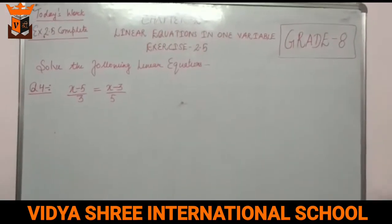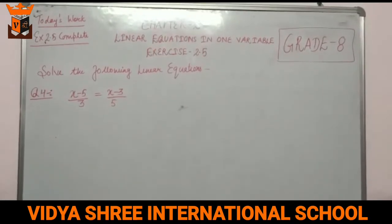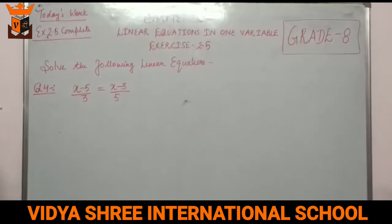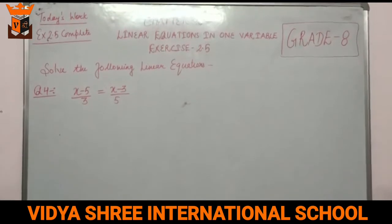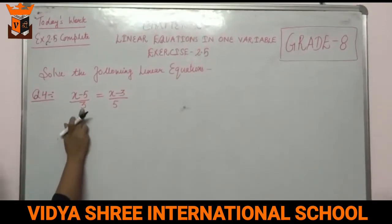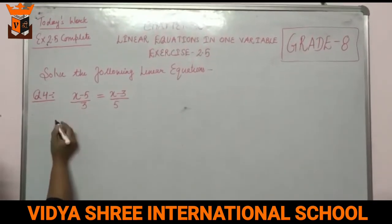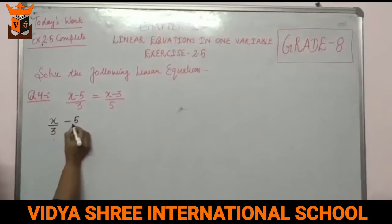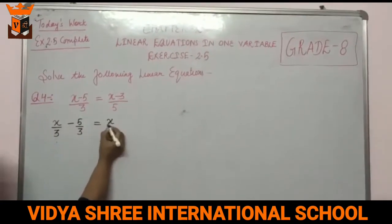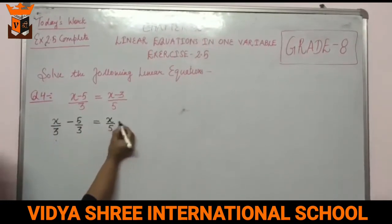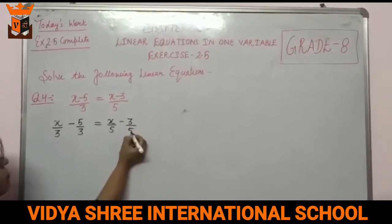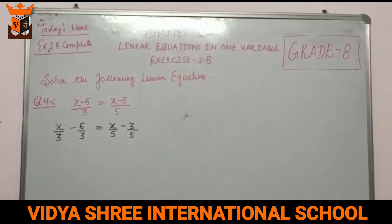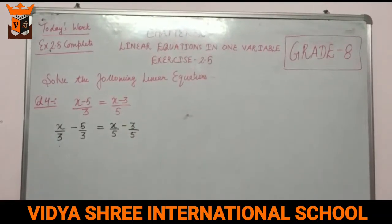This is question number 4: (x minus 5) upon 3 equals (x minus 3) upon 5. First we separate the denominators: x/3 minus 5/3 equals x/5 minus 3/5. In this way we have converted it into 4 terms.